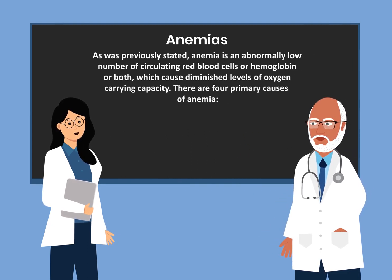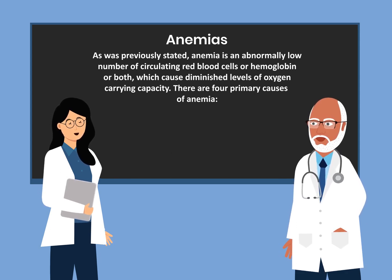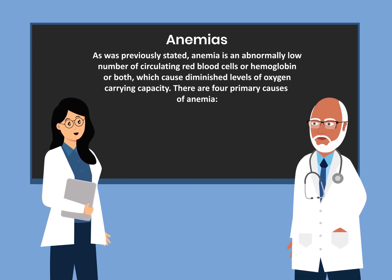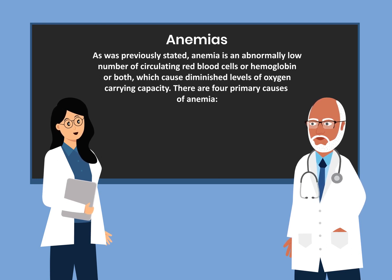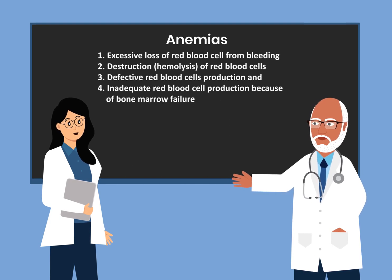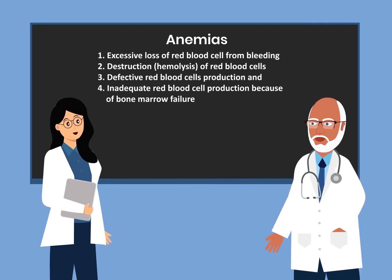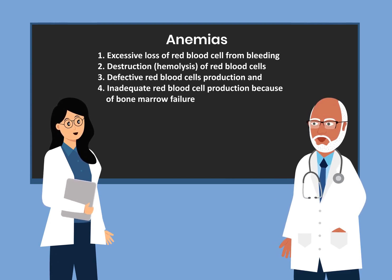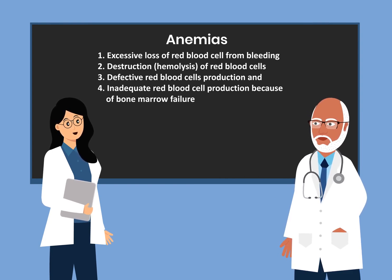Anemia is an abnormally low number of circulating red blood cells, or hemoglobin, or both, which causes diminished levels of oxygen carrying capacity. There are four primary causes of anemia. Number one, excessive loss of red blood cells from bleeding. Number two, destruction or hemolysis of red blood cells. Number three, defective red blood cell production. And number four, inadequate red blood cell production because of bone marrow failure.